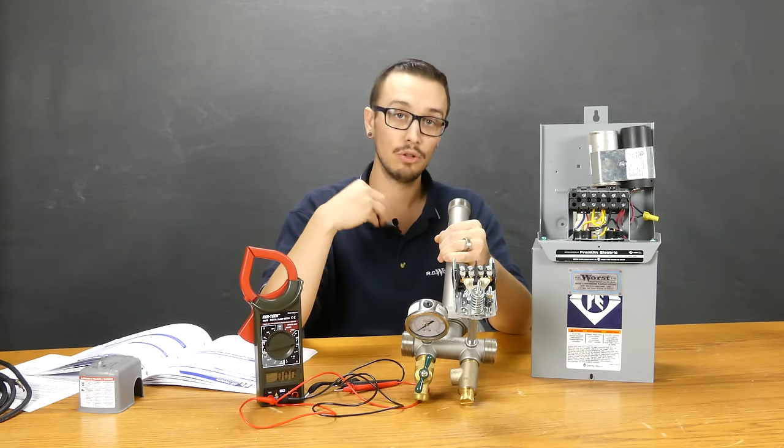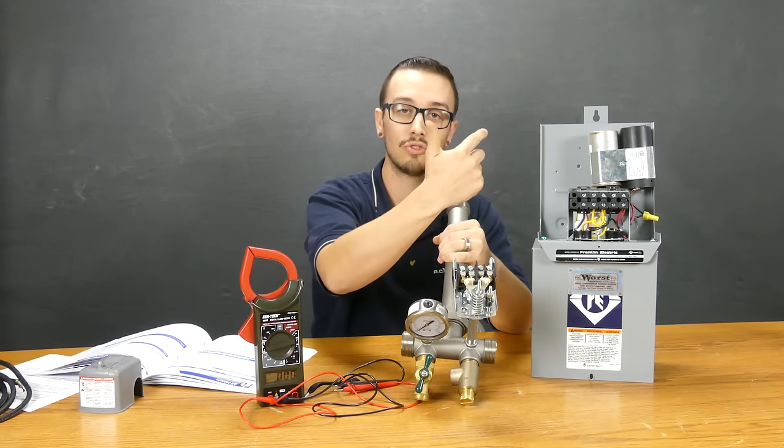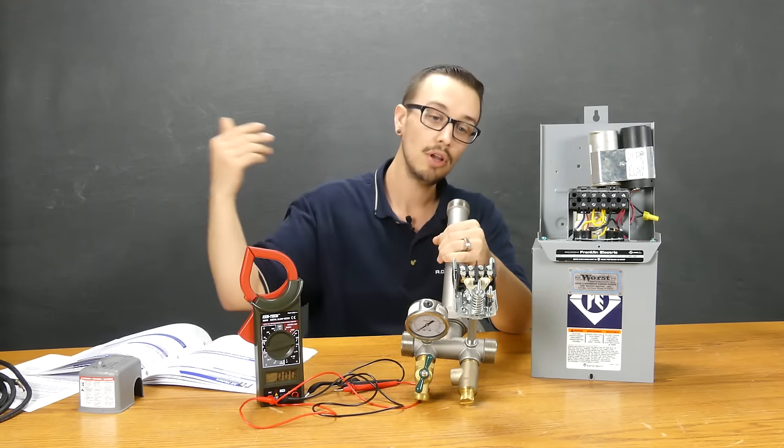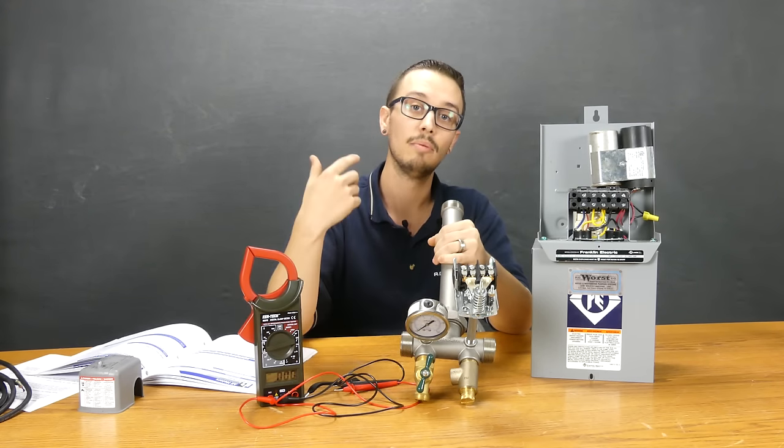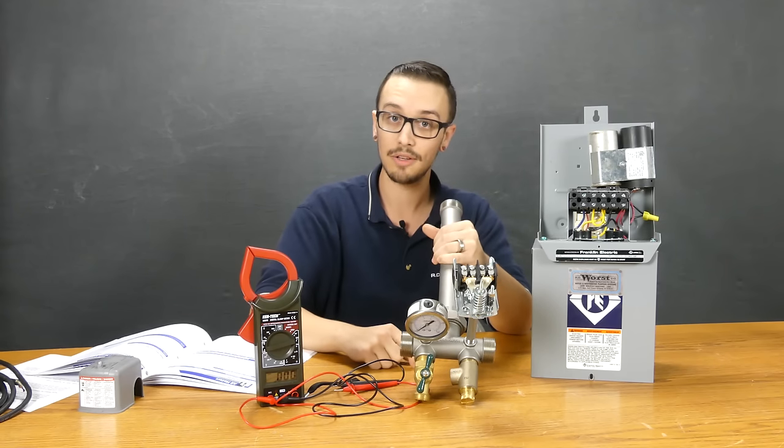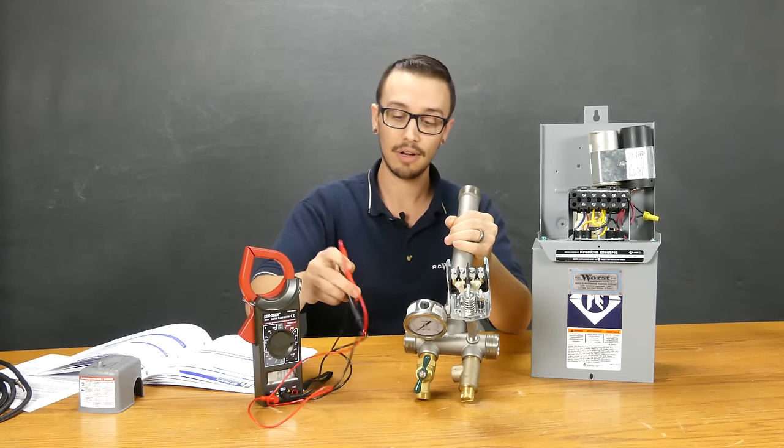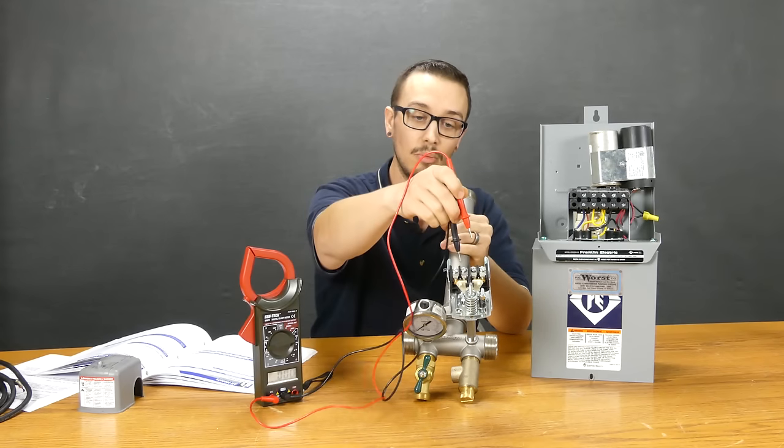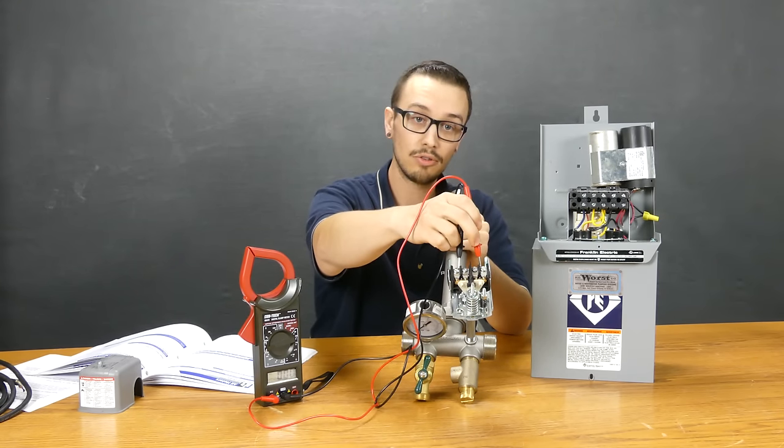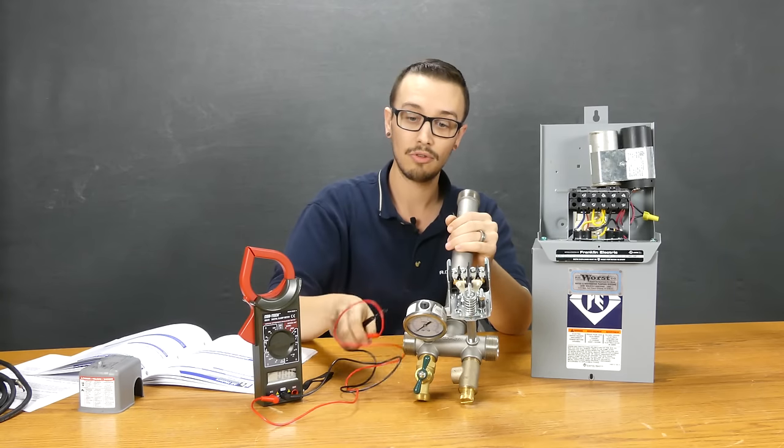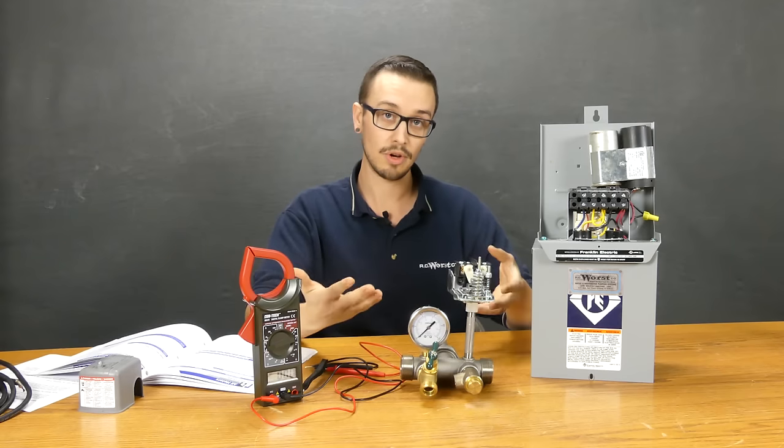Check the load side voltage. The load side would be the wires running to the control box, rather than the wires running to the pressure switch. This will allow you to confirm that power is getting through the pressure switch and making its way into the control box. Put the meter leads on the appropriate screws leading to the control box, and you should be reading 230 volts or plus or minus 10% to confirm it's working properly.